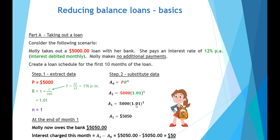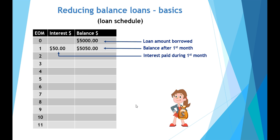We started with a debt of $5,000, and at the end of the first month Molly owes the bank $5,050, so she has been charged $50 interest for the first month. Looking at the loan schedule — AOM stands for amount owing at end of month — our starting position was $5,000, and at the end of the first month Molly has interest of $50, so she now owes $5,050.